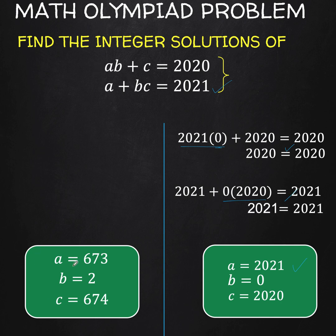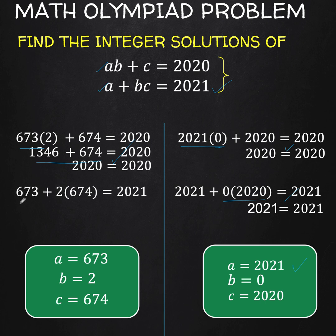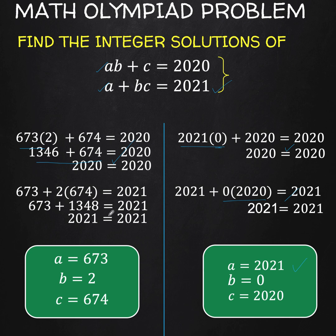For the second solution set, substitute A equals 673, B equals 2, and C equals 674 into the first equation: 2 times 673 gives 1346, and adding 674 gives 2020 equals 2020, which is correct. Substituting into the second equation, we again arrive at 2021 equals 2021, which is also correct.